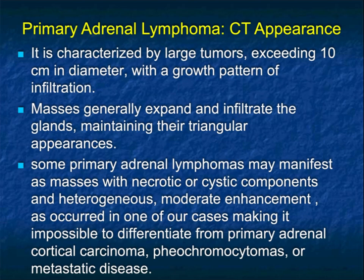Regarding lymphoma: characterized by large tumors, often over 10 cm, with infiltration rather than smooth margins — the masses generally expand and infiltrate the glands. When you think about it, primary adrenal lymphoma is very similar in appearance to primary adrenal cortical carcinoma. The key difference is that primary adrenal lymphoma is going to be bilateral, whereas primary adrenal cortical carcinoma is not.